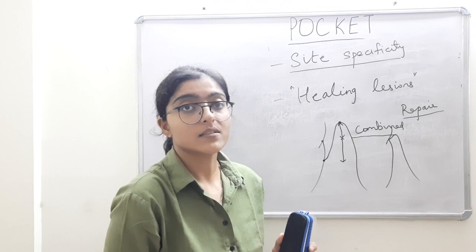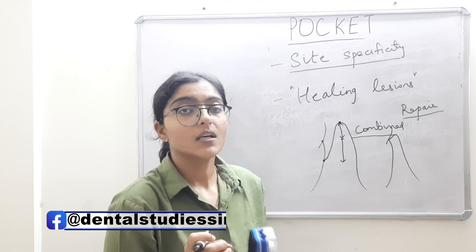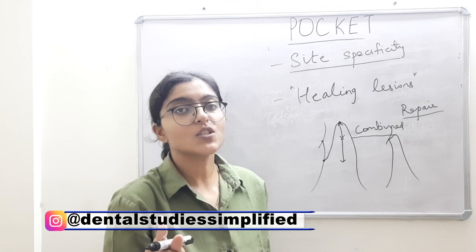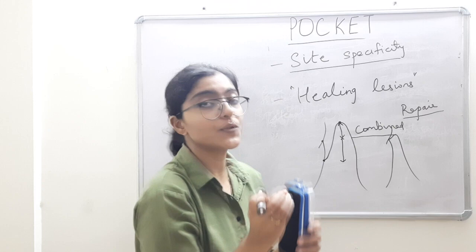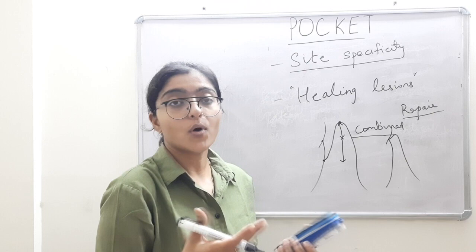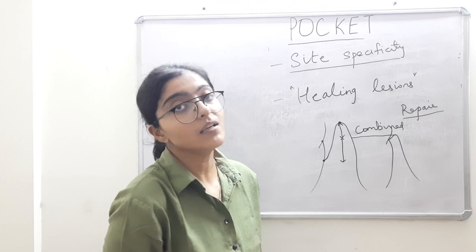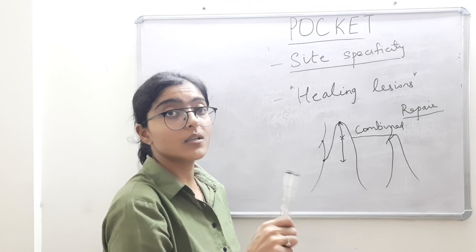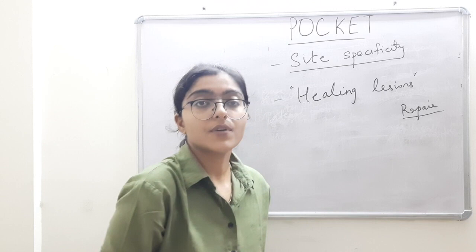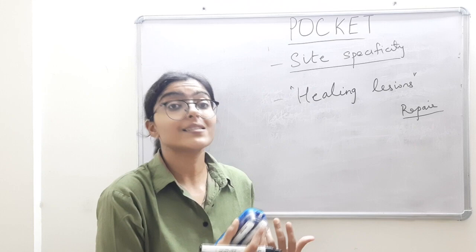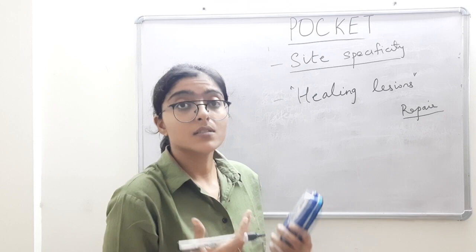Pseudo pockets have only coronal migration of the free gingival margin — the example is enlargement in the absence of any periodontal disease, i.e., true enlargement. True and periodontal pockets are the most important clinical feature of periodontal disease, especially those treated by flap therapy. Under true or periodontal pocket we have suprabony (also supracrestal, supraalveolar) and infrabony (also intrabony, subcrestal). Then we have simple pocket, compound pocket, and complex pocket also known as spiral, common in the furcation area.